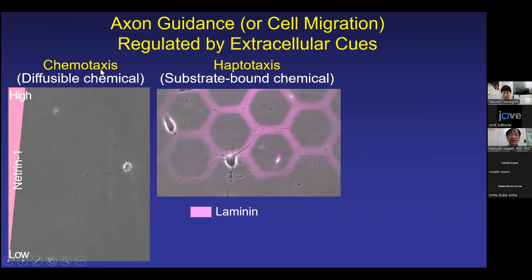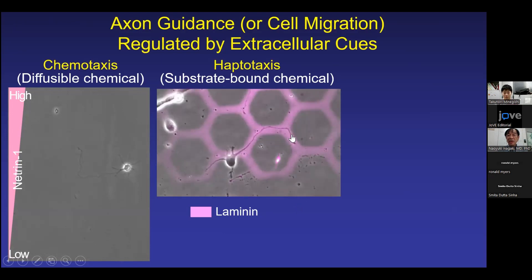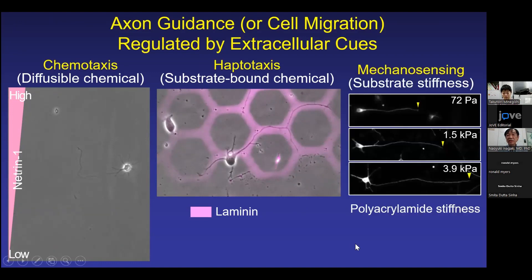There are two types of axon guidance or cell migration regulated by extracellular chemical cues. First is chemotaxis, regulated by a diffusible chemical cue. Here, the gradient of the attractive cue, netrin, is applied and the growth cone turns toward the netrin source. Another is haptotaxis, regulated by substrate-bound chemical cue. Here, the attractive cue laminin is coated on the substrate and growth cones migrate along laminin. Axonal extension is also regulated by mechanical cues: neurons cultured on polyacrylamide gel with different stiffness extend longer axons on stiffer substrate.